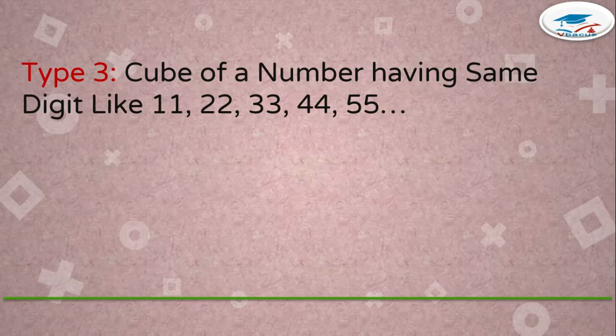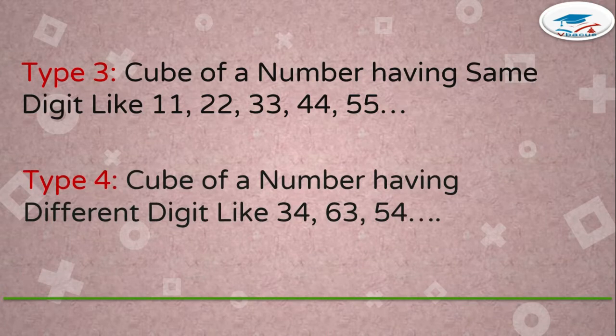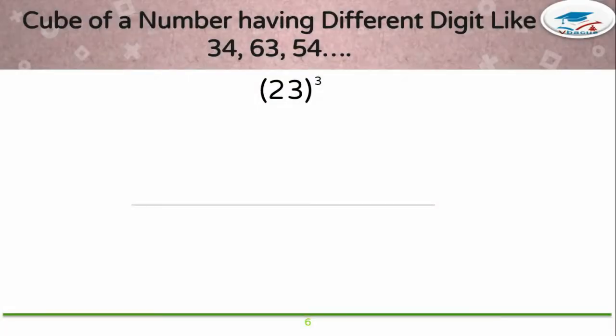44, 55, and so on. Type 4: cube of a number having different digits, like 34, 63, 54, and so on. I am not going to explain the first 3 tricks because they are not used for all 2-digit numbers. I am going to explain type 4 only, that is cube of a number having different digits like 34, 63, 54, and so on. Let us find out the cube of 23.